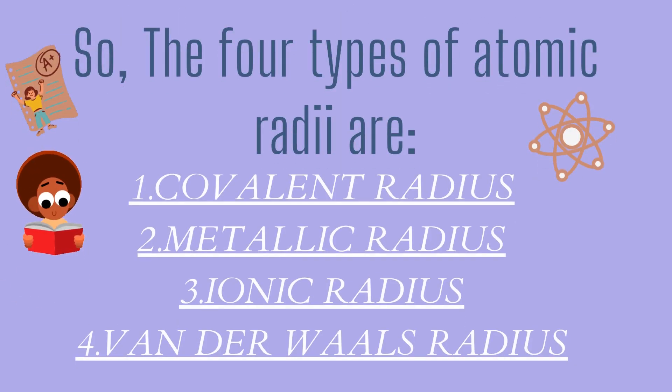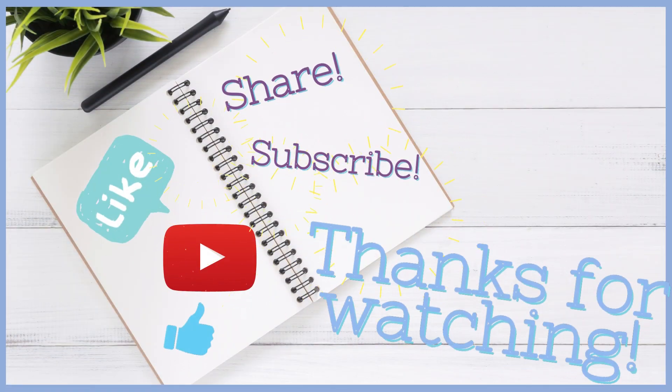So, the four types of atomic radii that we studied today are: Covalent radius, Metallic radius, Ionic radius and Van der Waal's radius. Thanks for watching, like, share, subscribe and see you in the next video.